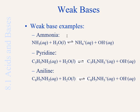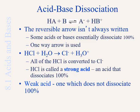The reaction doesn't go to completion — you arrive at some equilibrium situation. So we have strong acids and strong bases, and weak acids and weak bases. Whenever we have a reversible arrow, we know we have a weak acid or a weak base. When we don't have a reversible arrow, we know it's a strong acid, such as HCl.